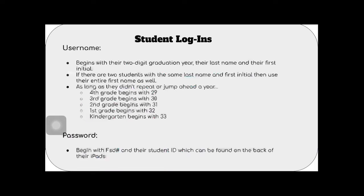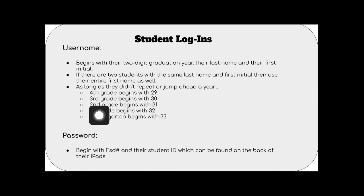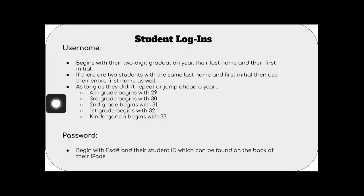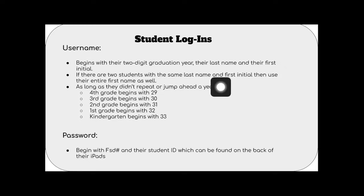Now the pattern of this — you can see here — fourth graders will typically begin with 29, third grade with 30, second grade with 31, first grade with 32, and kindergarten with 33. Keep in mind that that could change if they either repeated or jumped ahead a year. It's also going to be different if there are two students with the same last name and first initial — for instance, twins — then they'll actually use their entire first name as well instead of just their first initial.